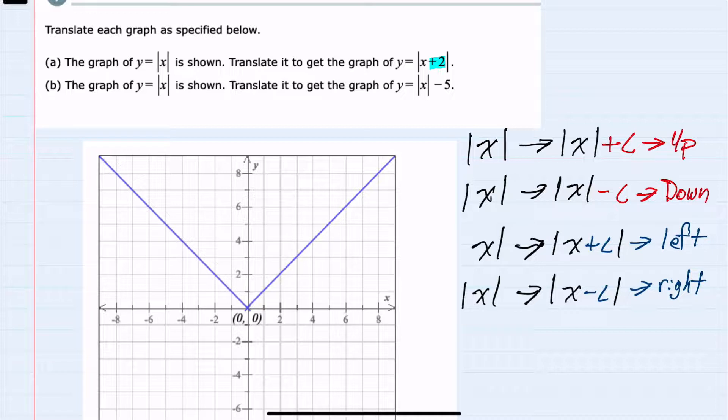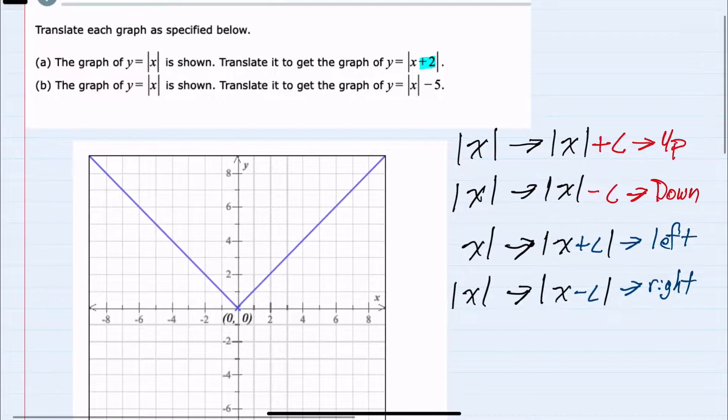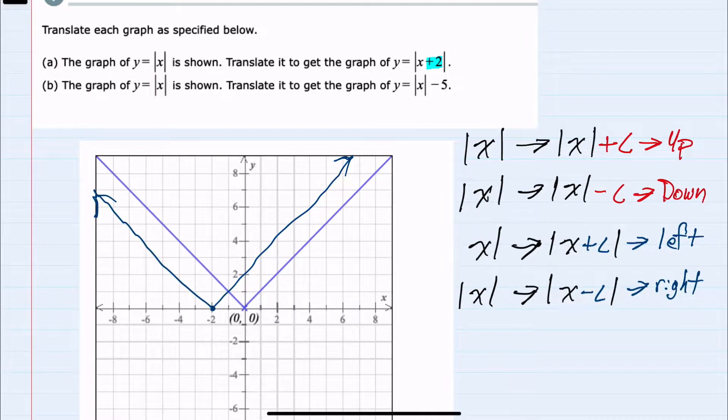So from our original y equals absolute value of x, if I shifted that two places to the left, it would look like this. So this would be graph A.